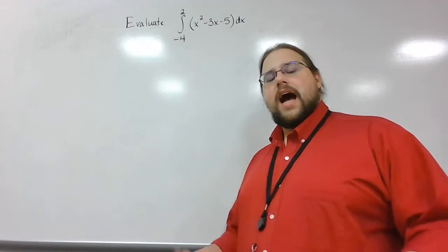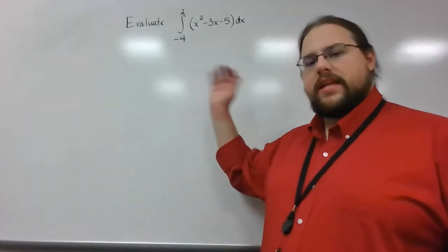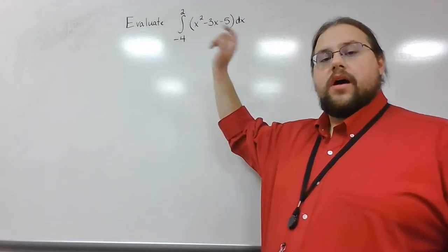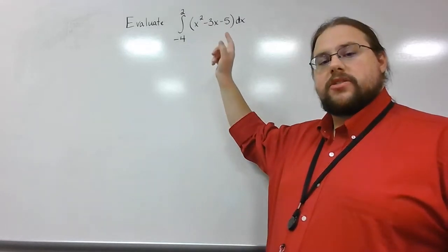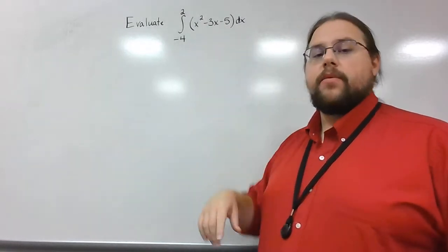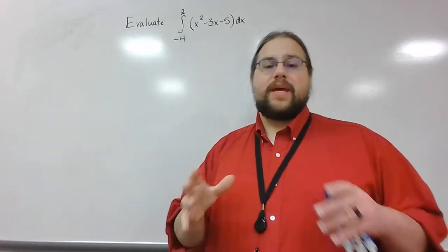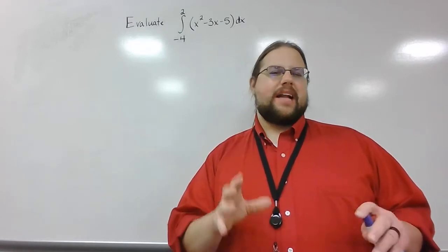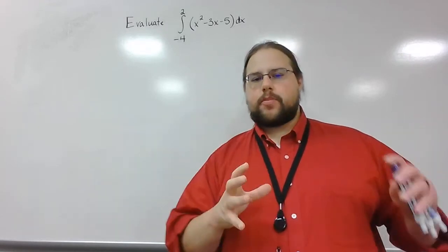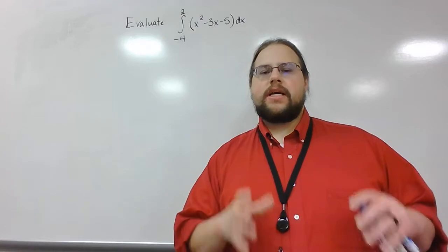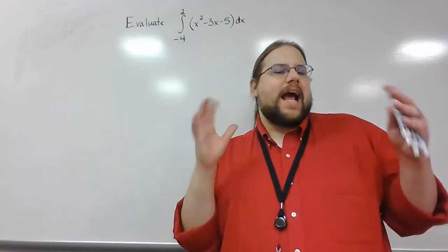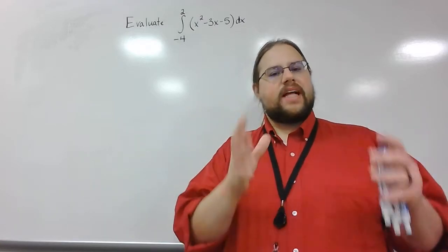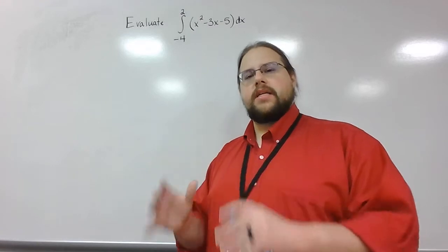In the last lesson, I evaluated the definite integral from negative 4 to 2 of x squared minus 3x minus 5 dx. When we did it, we got the answer of 12, but it required a lot of time, a lot of effort, and a lot of algebraic manipulation. Honestly, there has to be a better way — and that's where the fundamental theorem of calculus comes in.